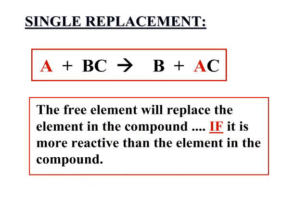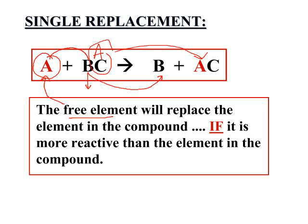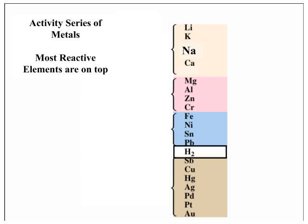Single replacement reactions will only work if the free element, the element that is not bonded, is more reactive than the element that is bonded. Then it is reactive enough to want to react. So it will push out this element and react to form the new compound. To decide if an element is more reactive than another, you use the activity series of metals.